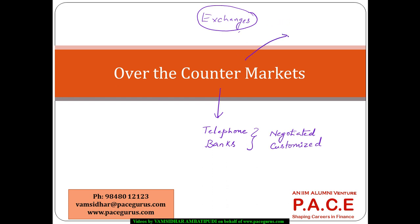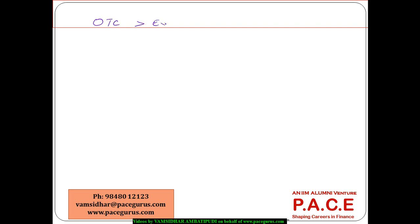Close to one hundred percent of forward contracts happen over the counter, and swap contracts also happen over the counter only. To some extent, certain types of options called exotic options are also handled over the counter. The majority of financial transactions today happen over the counter, and the OTC market is much greater compared to the exchange-traded derivatives market across the world. Forwards and swaps are instruments which are one hundred percent dealt over the counter.